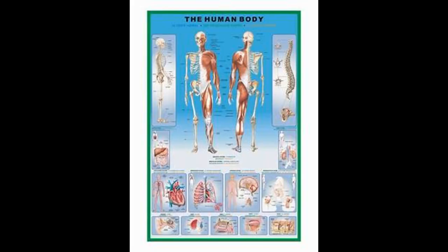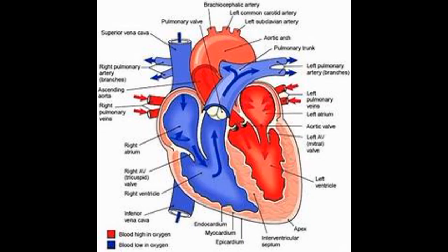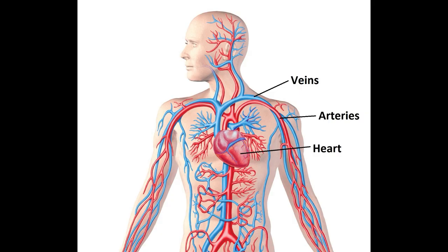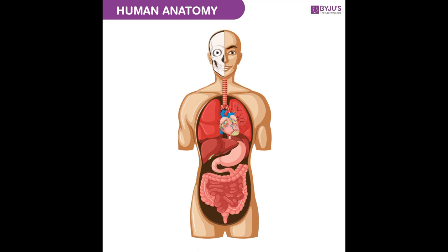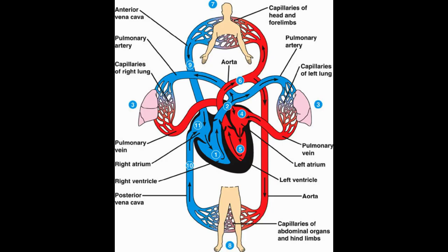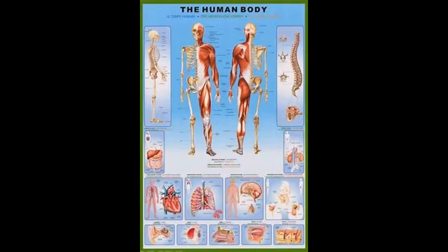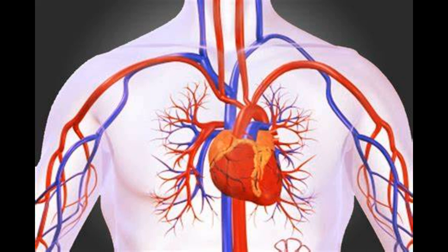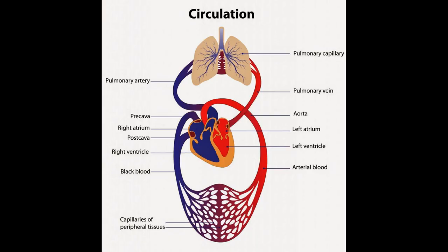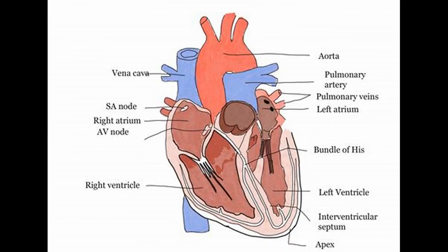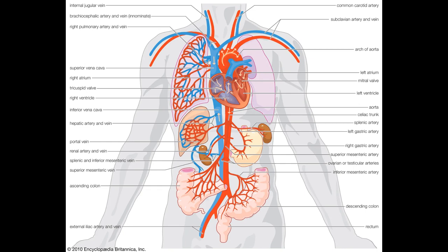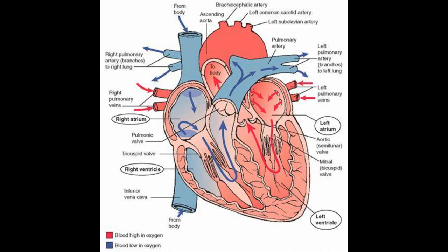The chemical level includes atoms, the smallest units of matter that participate in chemical reactions, and molecules formed when two or more atoms join together. Certain atoms such as carbon, hydrogen, oxygen, nitrogen, phosphorus, calcium and sulfur are essential for maintaining life. Two familiar examples of molecules found in the body are DNA, the genetic material, and glucose, commonly known as blood sugar.